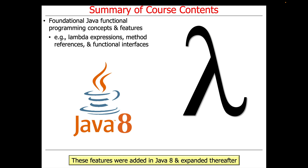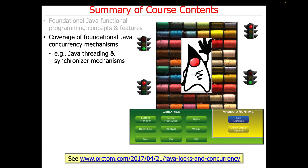So let's talk about the course contents. The first part of the course will give an overview of foundational Java functional programming concepts and features, things such as lambda expressions, method references, and functional interfaces. These features were initially added in Java 8 and then expanded thereafter over the past other 12 releases or so. Naturally, we'll also spend a lot of time covering foundational Java concurrency mechanisms, such as Java threading and synchronizer mechanisms.